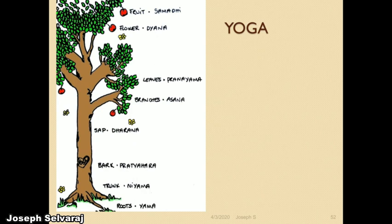The last topic is yoga. For stress management, the last topic is yoga and meditation, which are used to control stress. There are many asanas in yoga: samadhi, dhyana, pranayama, asana, dharana, niyama, and yama. We can practice yoga or go to our temple or church in our religious moods for stress management. Yoga is given in your syllabus, and an important question in the first unit is how yoga and meditation help control stress management. Thank you.